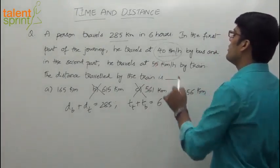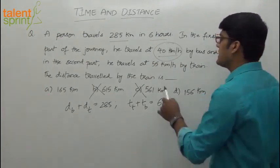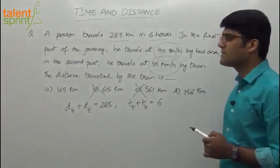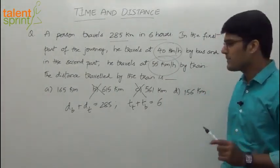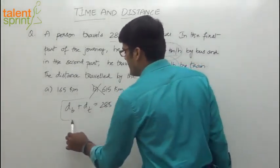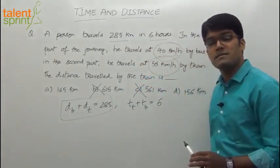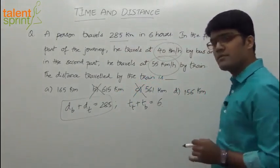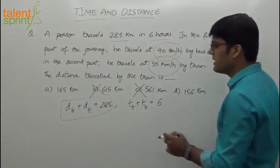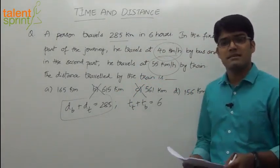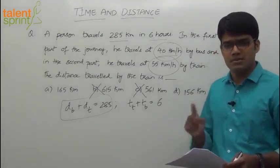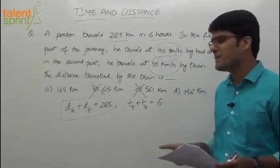What else do we know? In the first part, he travels at 40 kilometers per hour by bus. And in the second part, he travels at 55 kilometers per hour by train. Let's work on the second equation here. What is time? Time is distance by speed. Speed is equal to distance by time. Time is distance by speed.